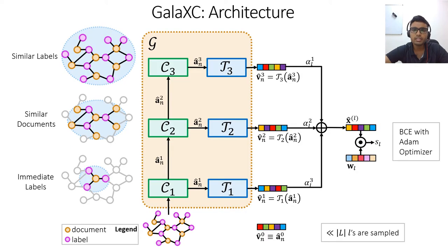In extreme classification with millions of labels, label set can have significant variation in terms of semantics and statistics and thus each label can have a different view of the graph. To this end, we propose a novel label attention scheme that allows each label to attend to the different levels of neighbourhood for a document.